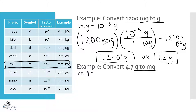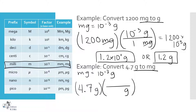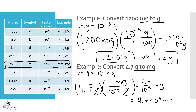Now going from grams to milligrams — the opposite direction. We use the same conversion factor: milligrams equals 10 to the negative third grams. Starting with 4.7 grams, I take the conversion factor and put grams on the bottom to cancel out my units, with one milligram on top. I end up with 4.7 over 10 to the negative third milligrams, which equals 4.7 times 10 to the third milligrams, or 4,700 milligrams.